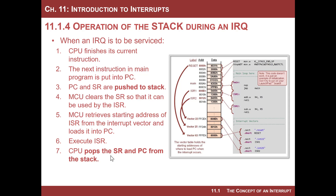To return to the main program, all it does is pop the status register and the program counter from the stack. When it does that, it restores the status register so all the flags are restored, the GIE bit is restored, and equally importantly, the program counter is set back to the main program. The address that went into the program counter was the address of the next instruction that was to be executed in the main loop prior to the interrupt service routine. These are the steps that are involved.